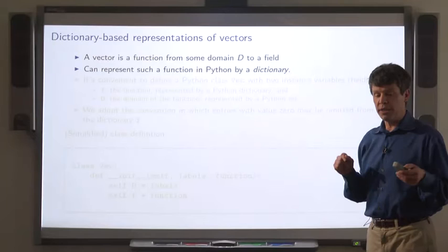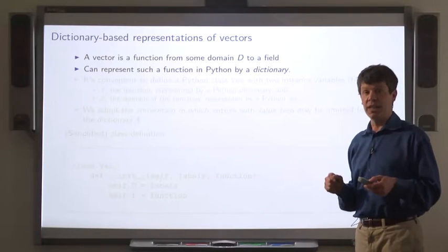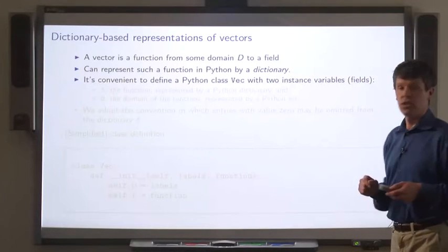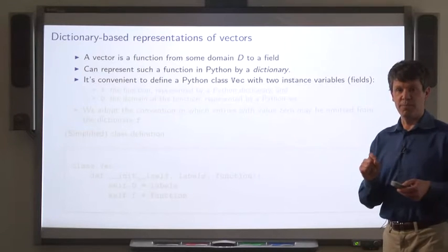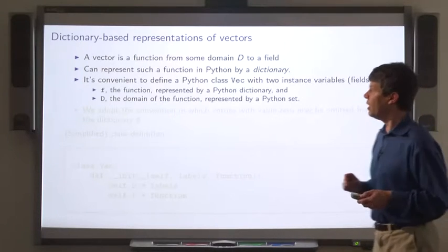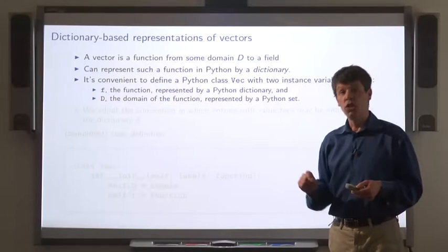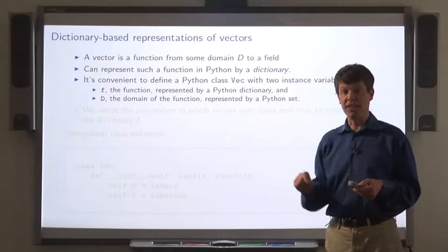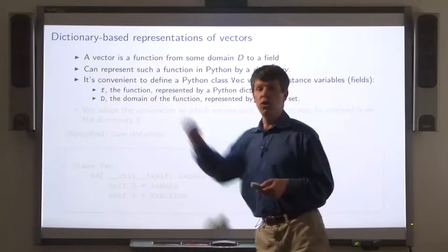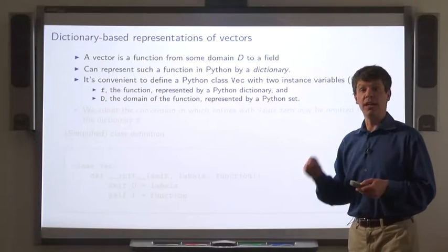So we're going to develop a class, a Python class, called vec with two instance variables, two fields. One is F, which represents the function using a Python dictionary. The other is D, which represents the domain using a Python set.